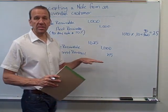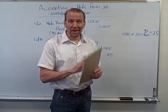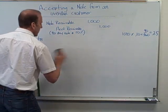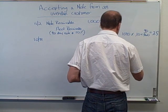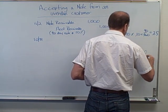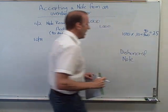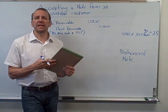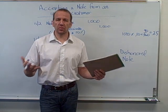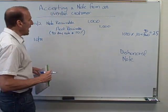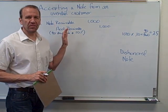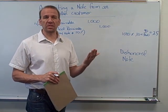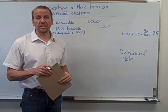Now let's look at an example of dishonoring the note. On October 31st, in this example, the customer doesn't pay us and isn't planning on paying us anytime soon. We've been in contact with them and for whatever reason they're having financial struggles. What happens is we convert this back to an accounts receivable, because it's no longer accruing interest — the 90 days are up. We put it back into accounts receivable so we can monitor it and possibly write it off in the future.